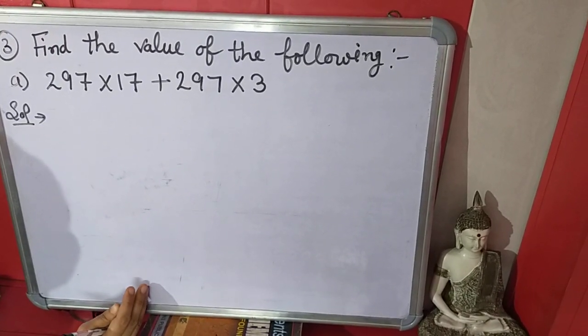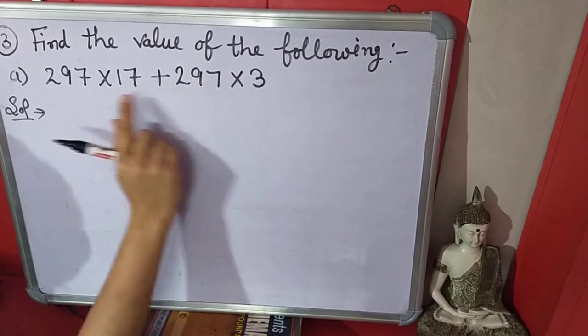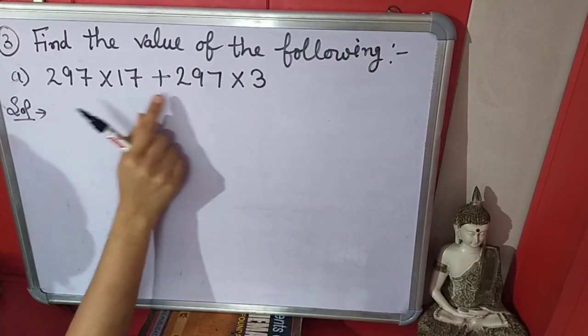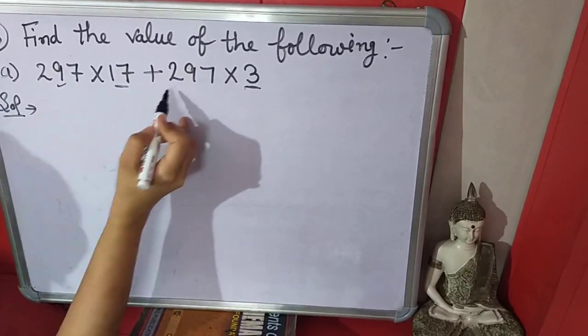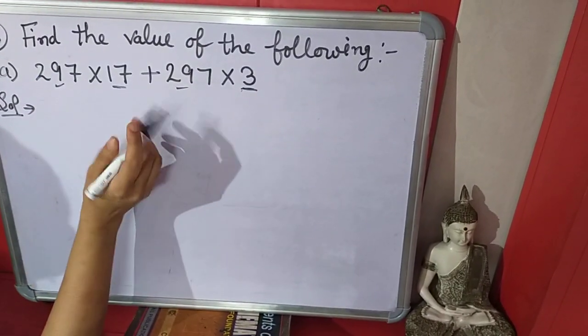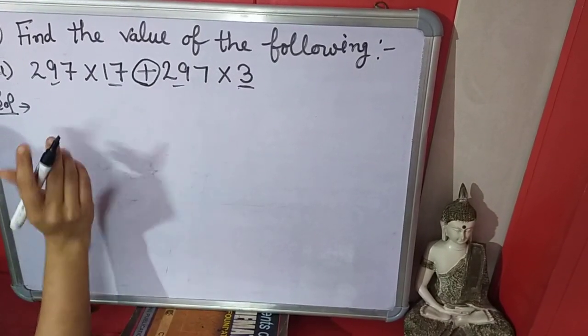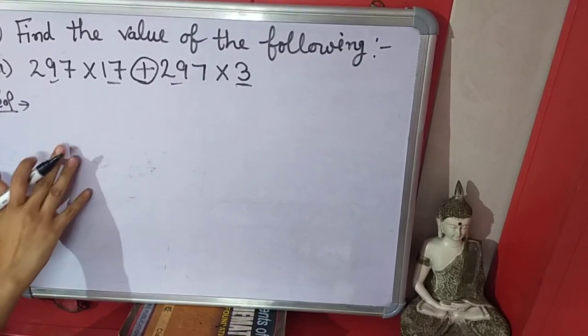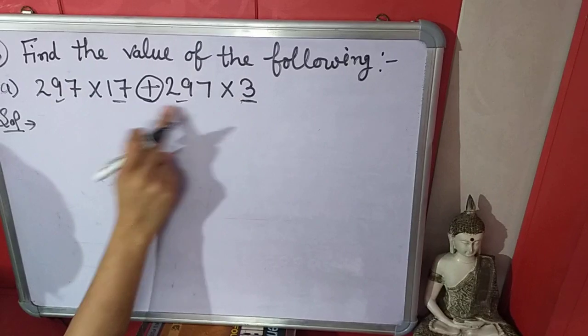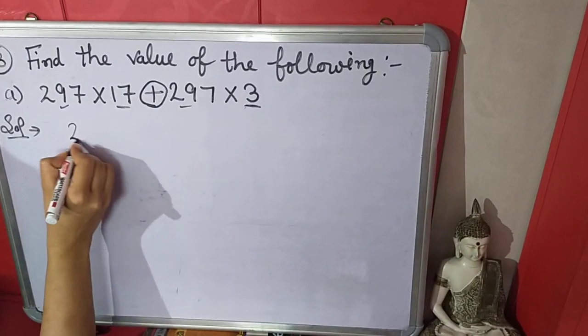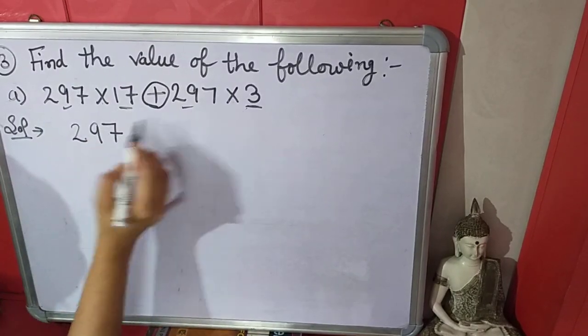How we will find it is distributive property? If both numbers are multiplied by the same number, and between these two numbers a plus or minus operation will come, then we will use distributive property. Now what we will do, we will take common this same number from these two numbers. Like 297 will come outside and multiply also.